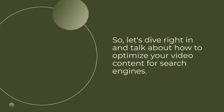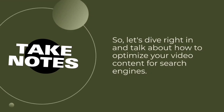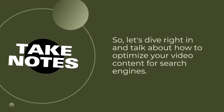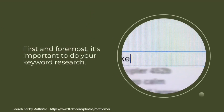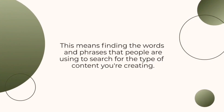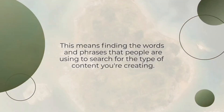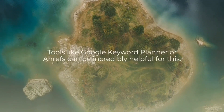So let's dive right in and talk about how to optimize your video content for search engines. First and foremost, it's important to do keyword research. This means finding the words and phrases that people are using to search for the type of content you're creating. Tools like Google Keyword Planner or Ahrefs can be incredibly helpful for this.